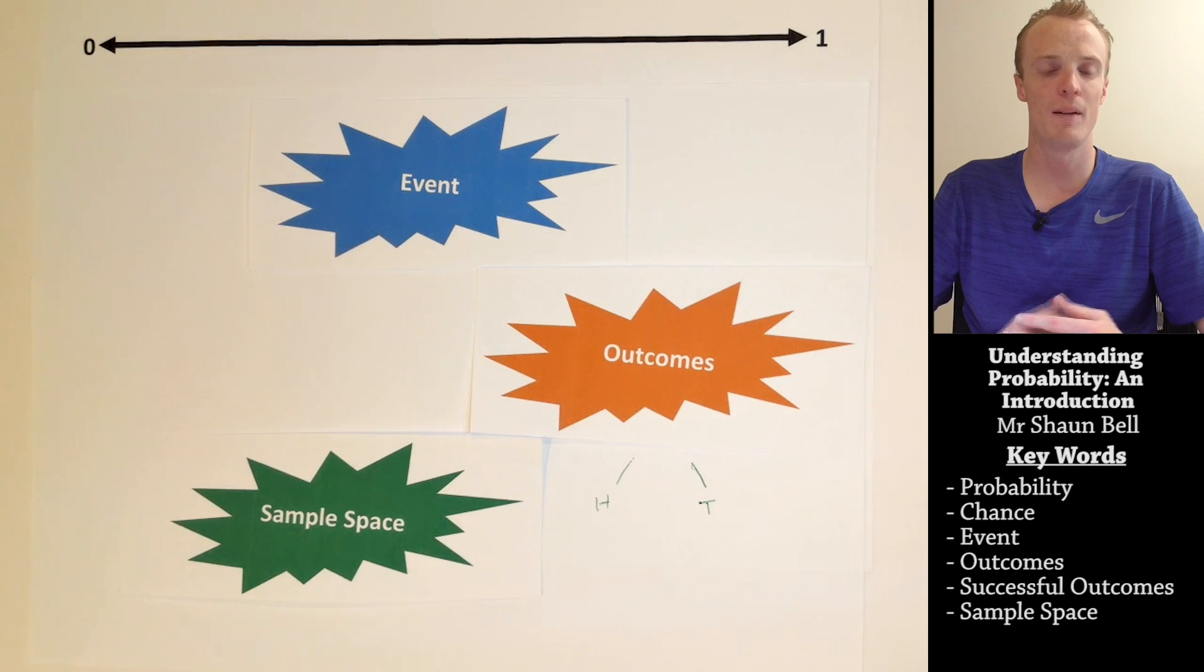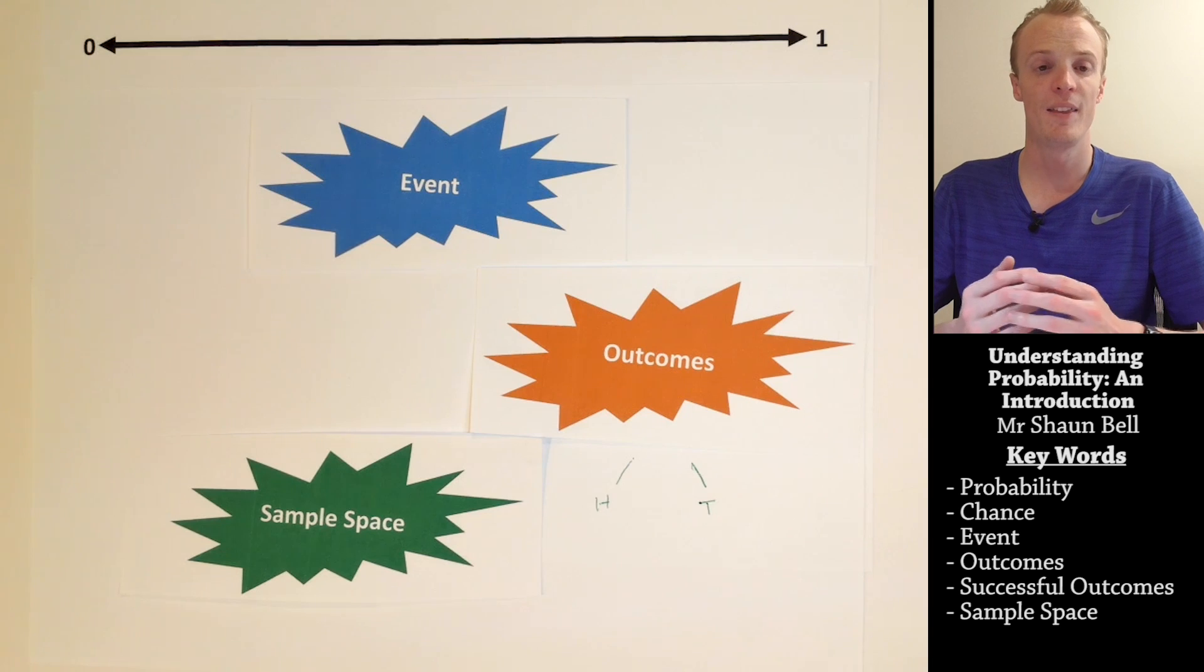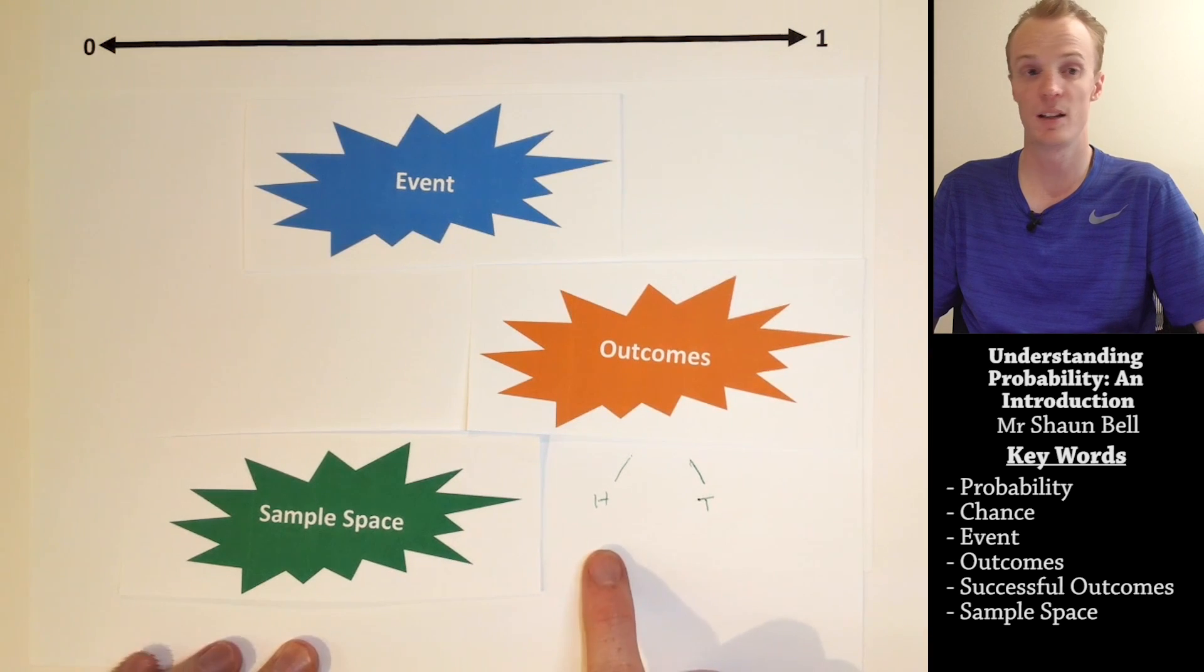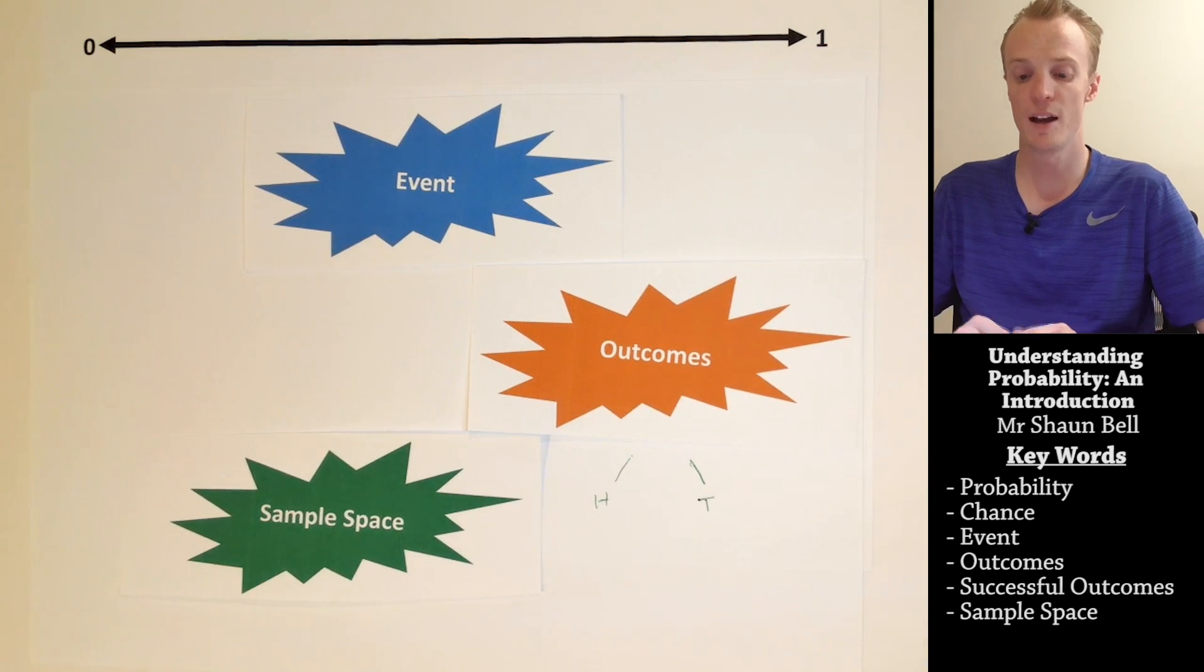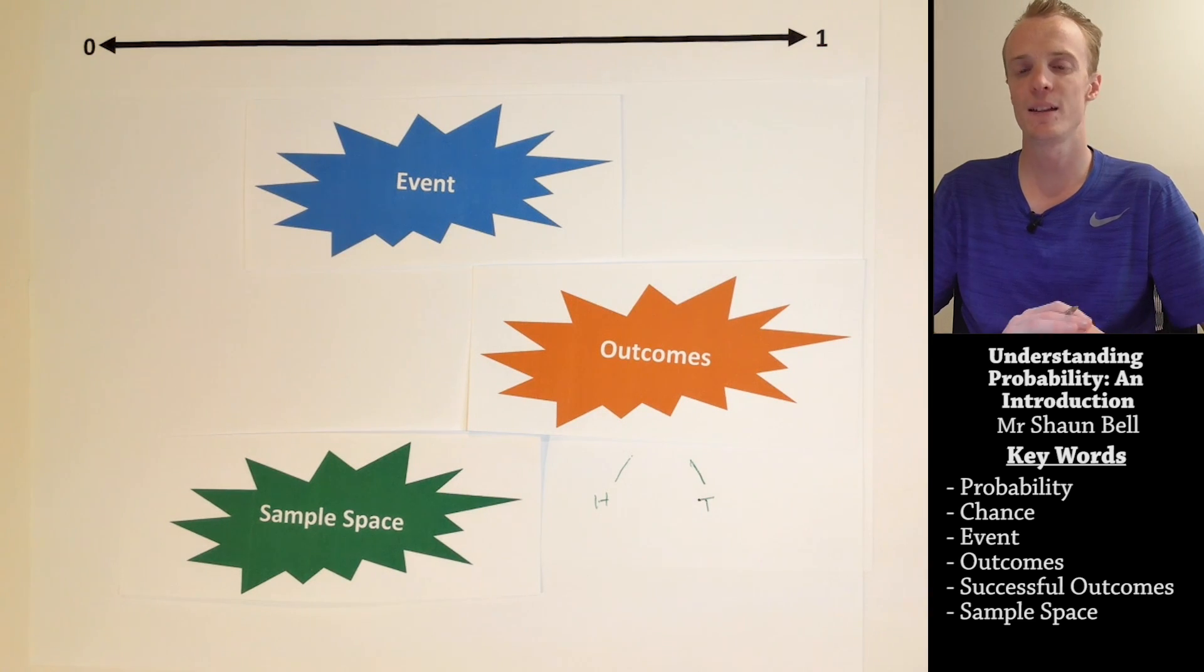When we talk about possible outcomes in probability, we talk about sample space. To calculate theoretical probability, we need to know what the sample space is. A sample space is simply a list of all the possible outcomes, and these outcomes must all be equally likely. Continuing from our example of flipping a coin, our list of possible outcomes is either getting a head or a tail. So this here is also known as our sample space.